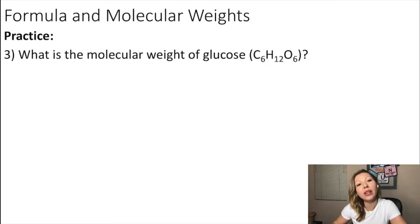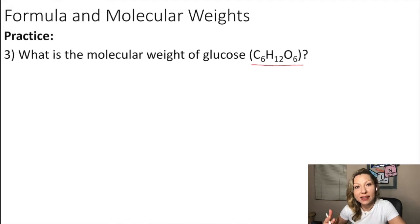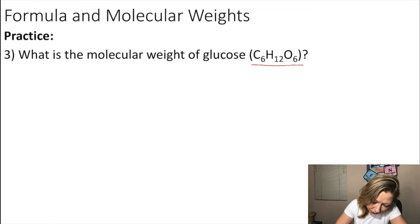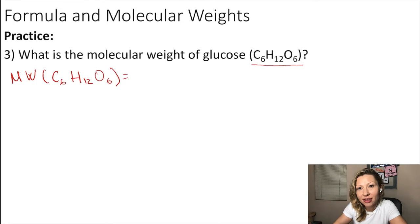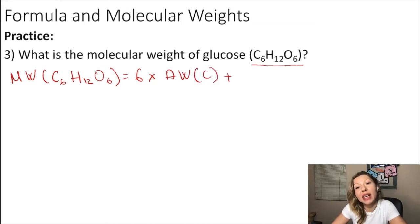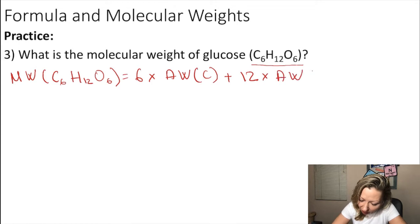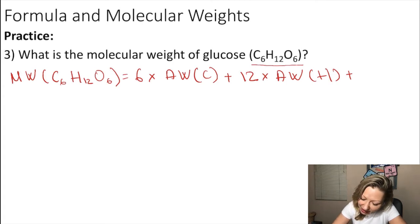Let's figure out the molecular weight of glucose. This is a molecule, so again we take the sum of the atomic weights of each atom. The molecular weight (MW) of glucose, which is C₆H₁₂O₆: we take six times the atomic weight of carbon, plus twelve times the atomic weight of hydrogen, plus six times the atomic weight of oxygen.